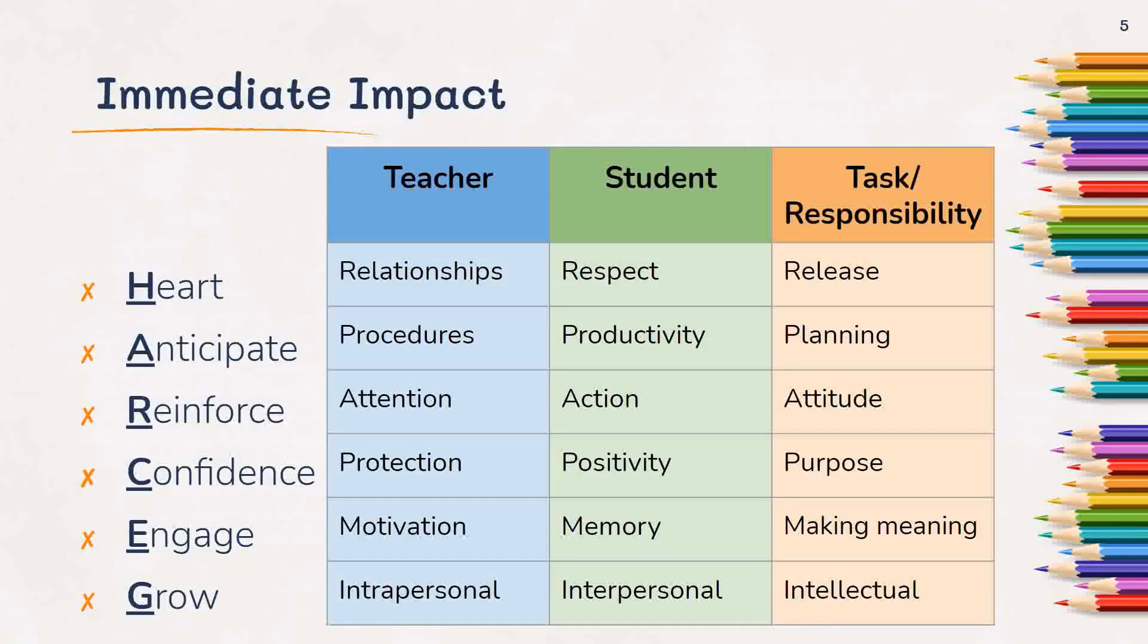As we're going through the immediate impact sequence, we're going to go through three waves. If you look on the screen here, we're going to go through the Teacher column down first. The next episode, episode two, is going to start with the relationships. And then we're going to go through procedures and attention and so on. In our first wave through, the next six episodes, we're going to be looking at the six parts of the Take Charge model, but specifically at what is the teacher doing. We're going to focus on teacher actions and teacher behaviors.